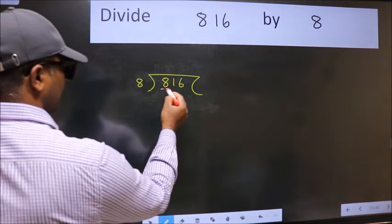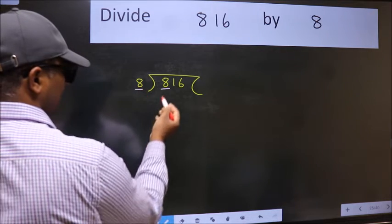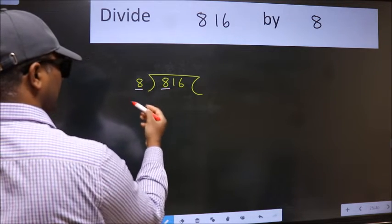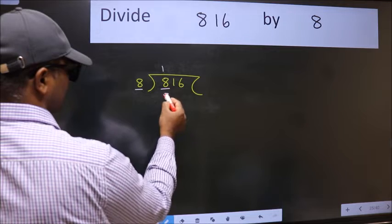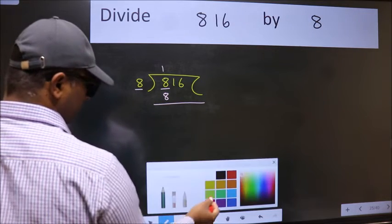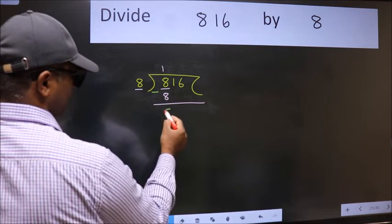Here we have 8 and here 8. When do we get 8 in 8 table? 8 once 8. Now, we should subtract. We get 0.